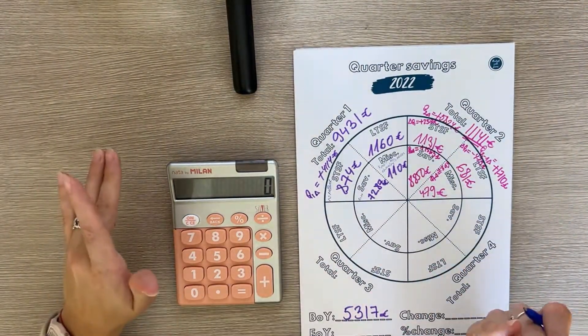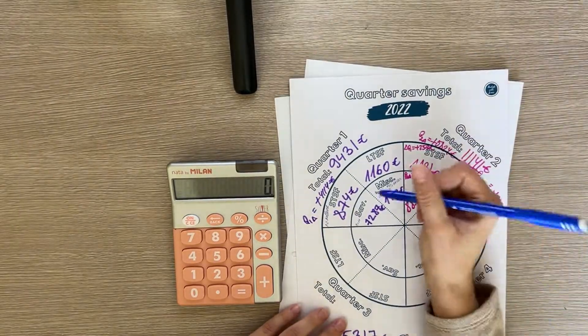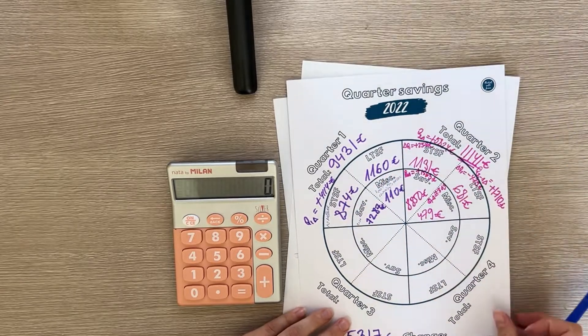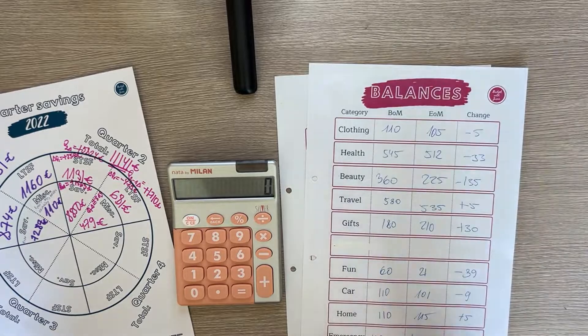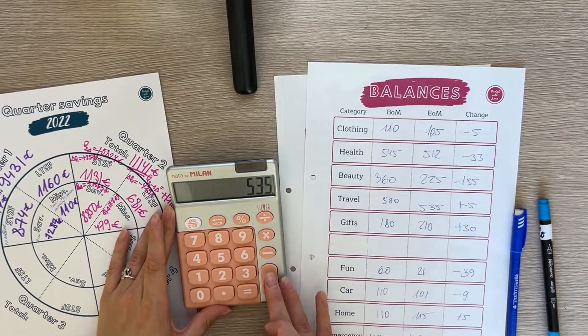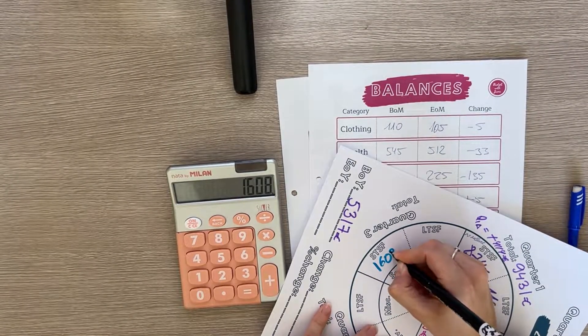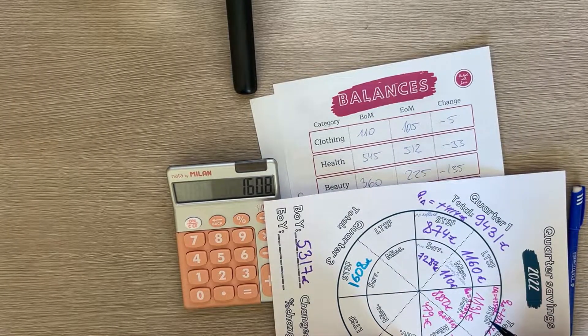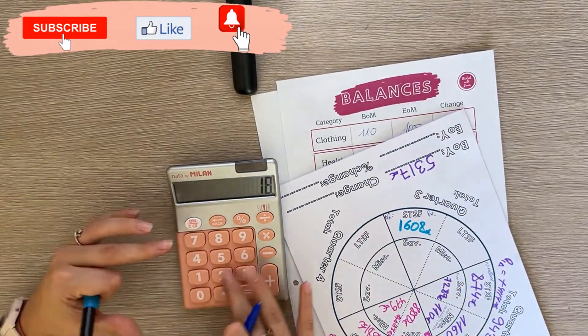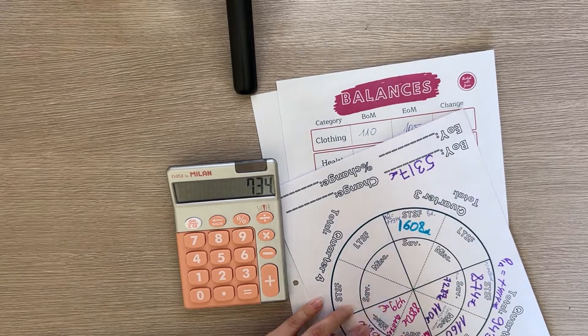Let's update now quarter three. We have ended September and we can now update this segment of the chart. Here I wrote which categories I don't count. In short-term sinking funds I count everything except rollover. Clothing, health, beauty, travel, gifts and fun, all of those are short-term sinking funds. That's a total of $1,608 euros. The change from quarter one is a positive $734 and from quarter two the change is a positive $477.